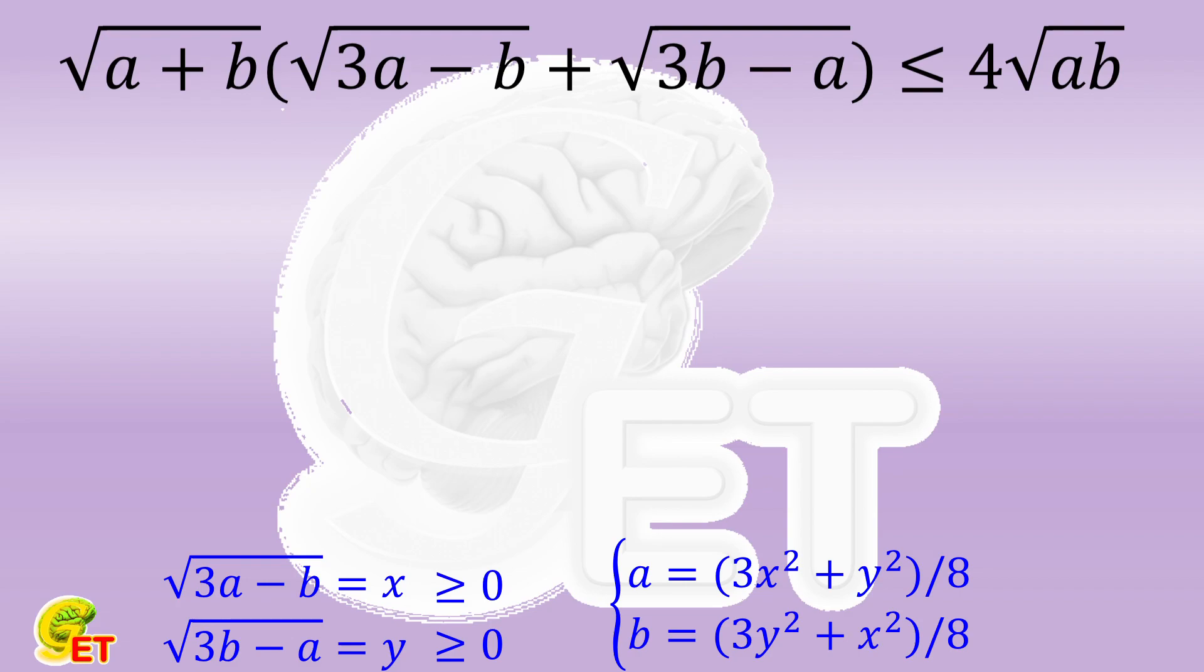We first bring them into the square root of A plus B and simplify it, and get the square root of half of X squared plus Y squared, and then multiply it by X plus Y, which is the whole left side of the original inequality.